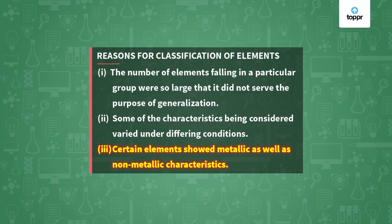Scientists were in search of a characteristic of an element that would never change, so that they could classify elements accordingly. A scientist named William Prout discovered that the atomic mass of an element never differs — it always remains the same. He considered this a very important characteristic and said that it could form a truly scientific basis for a satisfactory scheme of classification.